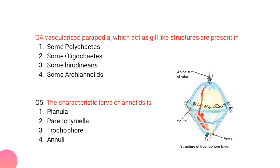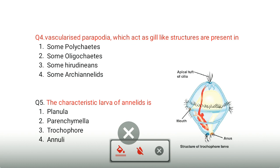Vascularized parapodia which act as gill-like structures are present in Polychaeta. Annelids have three classes: Polychaeta, Oligochaeta, and Hirudinea. In Polychaeta, they have many parapodia with many setae. These parapodia are vascularized with blood vessels, helping with respiration, acting as gill-like structures.